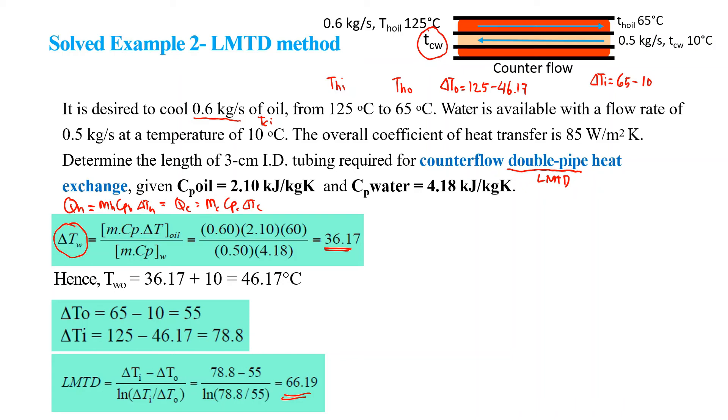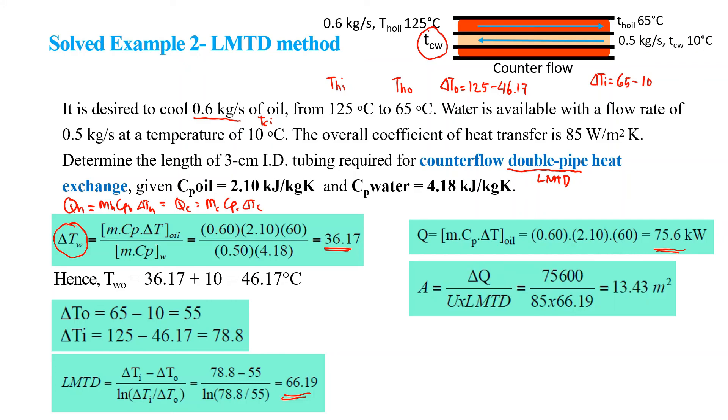So next, since the question is to find out the area, the length of the pipe, we can calculate that from the Q. Q you can calculate it with cold or hot, it will end up with the same value 75.6 kilowatt here. And next is we use the equation Q equal to U A LMTD. So we know Q from our calculation, we're given U and then we have calculated the LMTD and we get the total area required is 13.46 square meter.